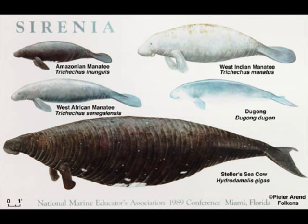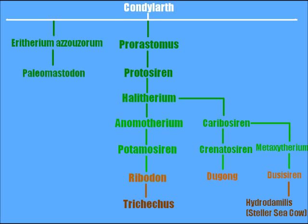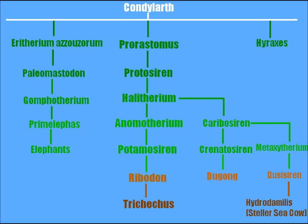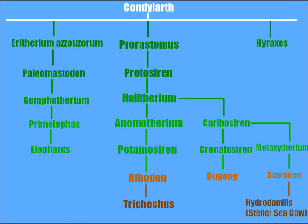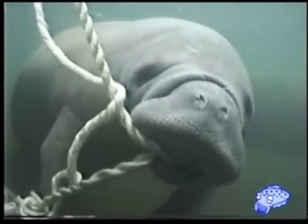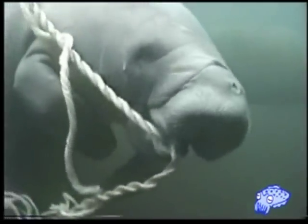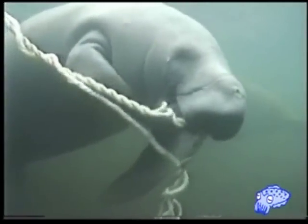The manatees belong to the order Cyrenia, along with the Stellar sea cow, which became extinct during the 1700s, and dugongs. Along with the order Proboscidia, which includes elephants, and the order Hyracoidia, which includes the hyraxes, they form a superorder called Paenungulata. By analyzing fossil evidence and homologies, we can infer that what was once a quadrupedal land animal transformed through adaptive radiation into what is now the cuddly ocean pacifist we call the manatee.